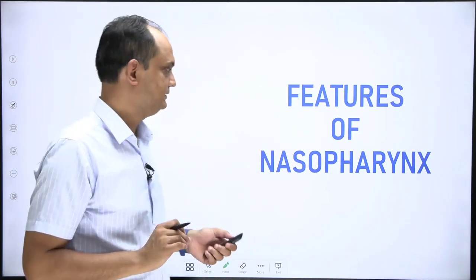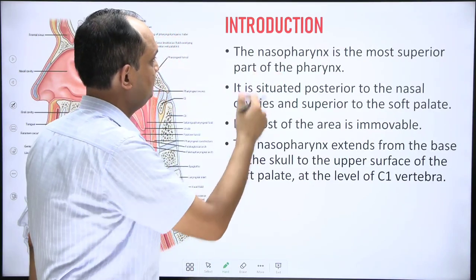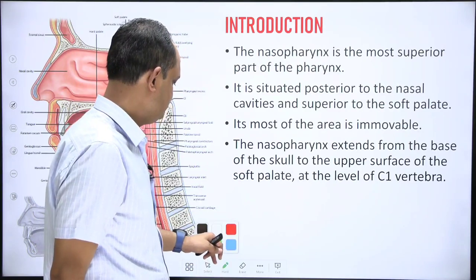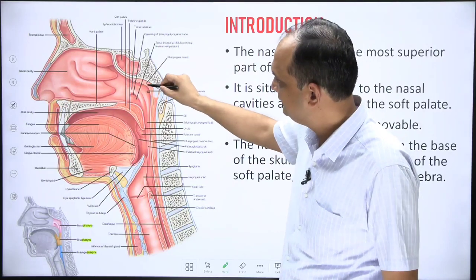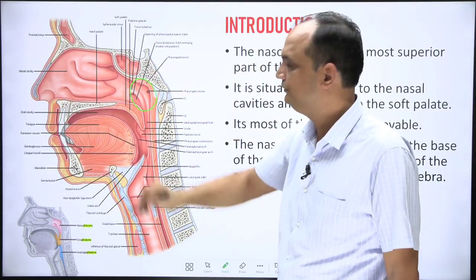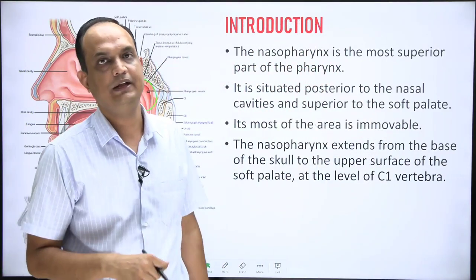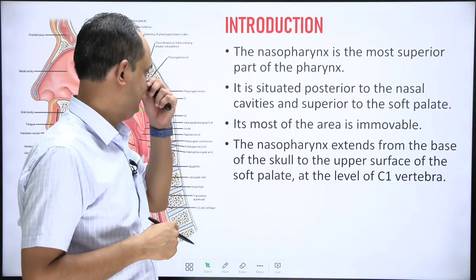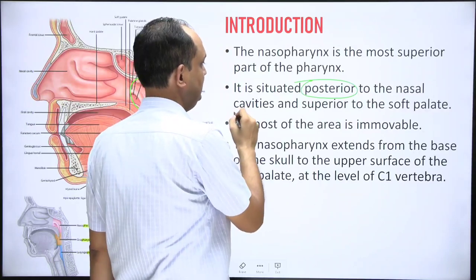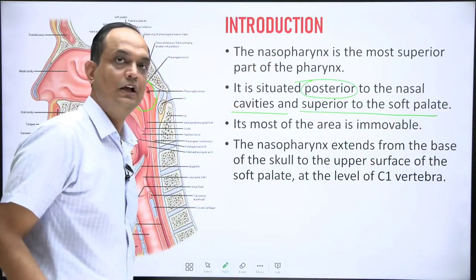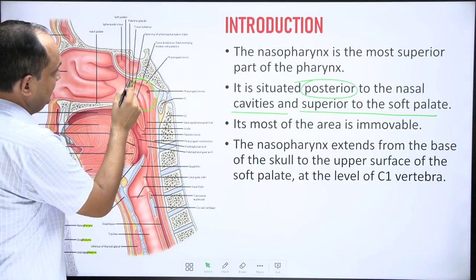The nasopharynx is the most superior part of the pharynx. The pharynx is a tube made up of muscle, and the uppermost part is known as the nasopharynx. Regarding its extension and boundaries, the nasopharynx lies posterior to the nasal cavity and superior to the soft palate. The posterior nasal cavity and the superior surface of the soft palate are the most important landmarks.